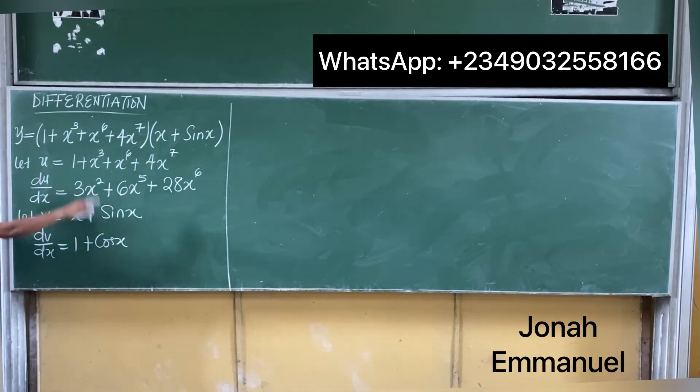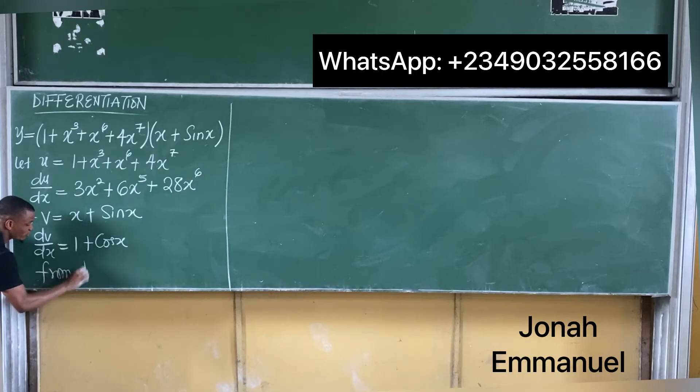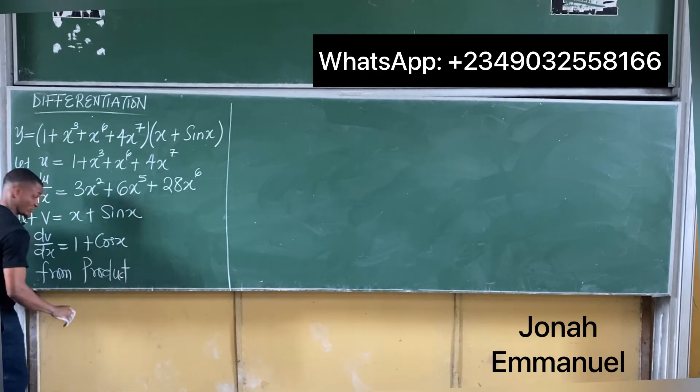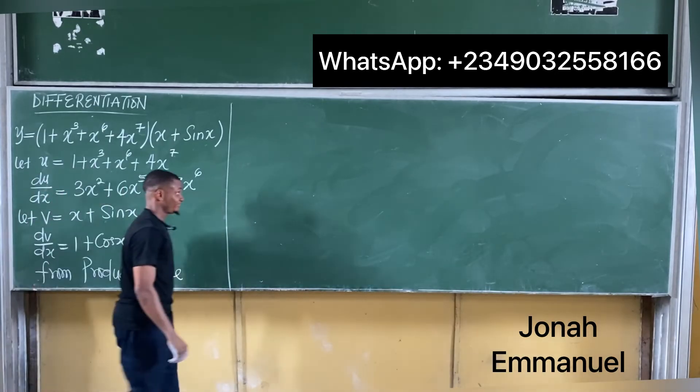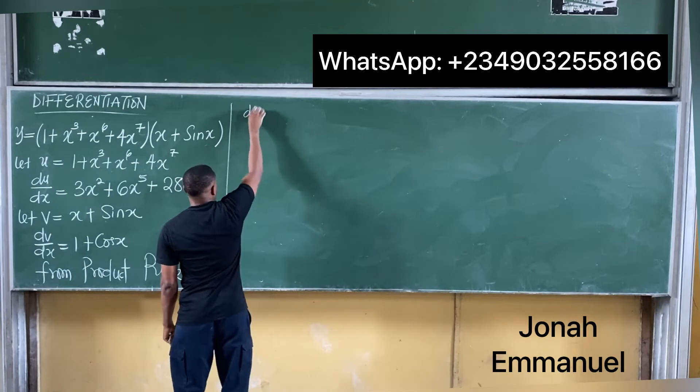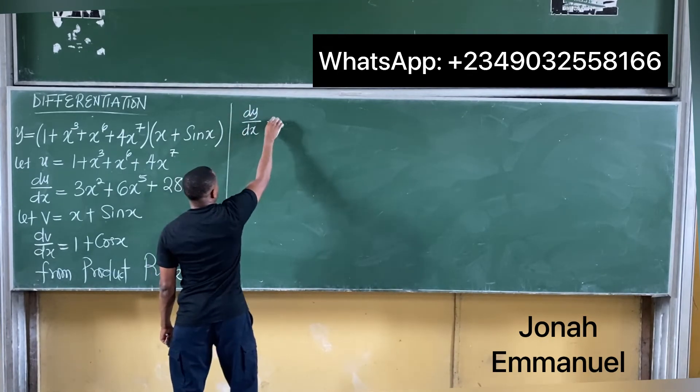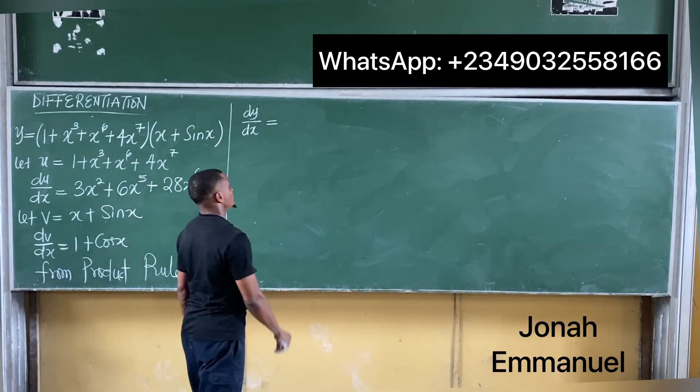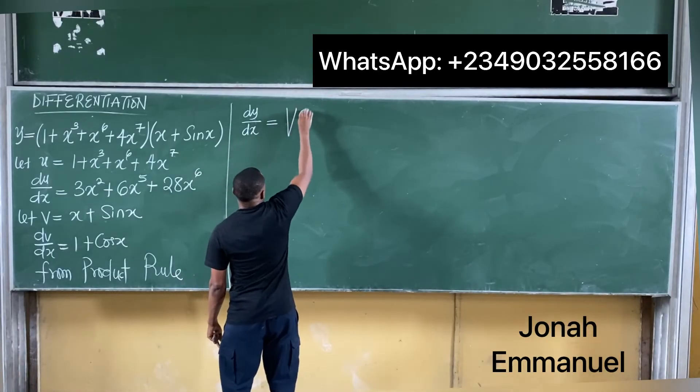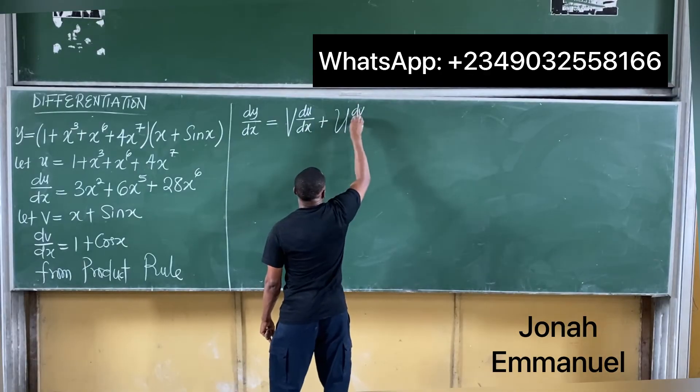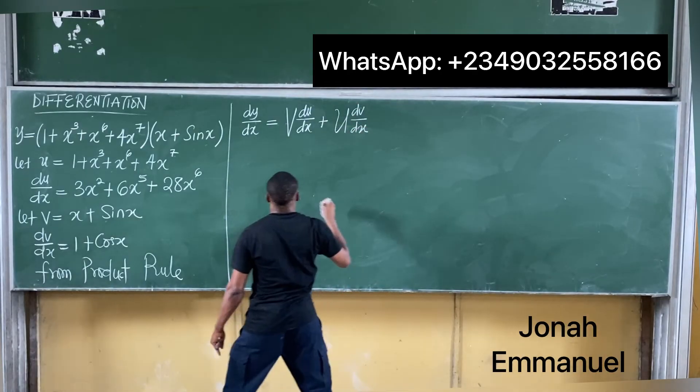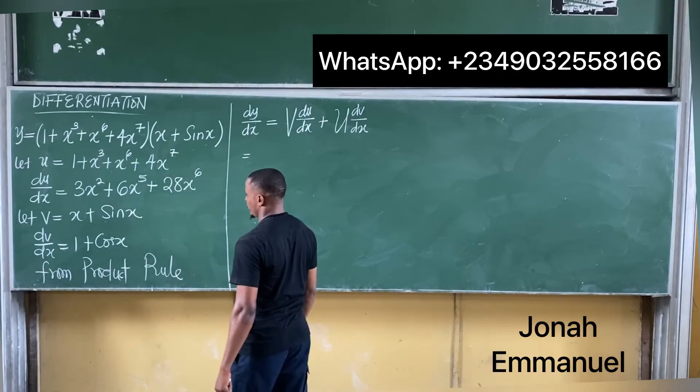If you're done with this now, our next step is what? From u and v to dy/dx. What's your formula? v(du/dx) + u(dv/dx). What's v again?